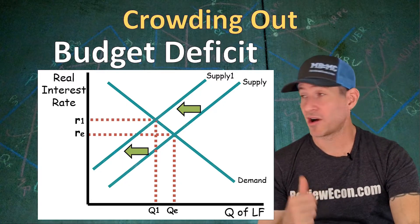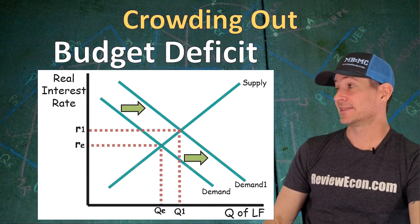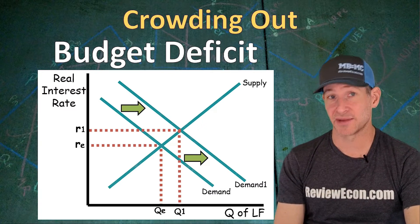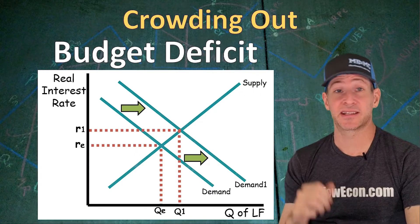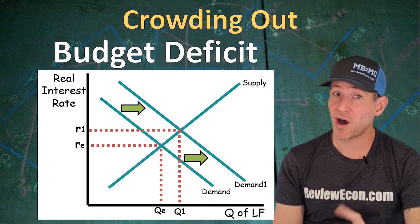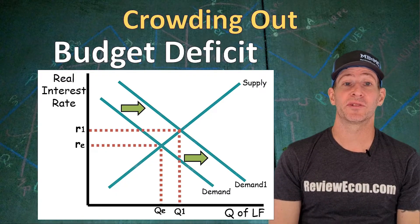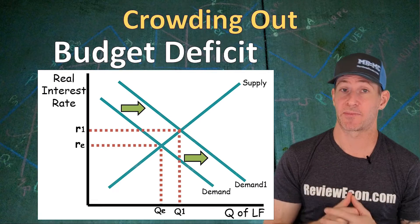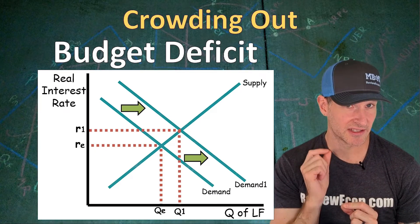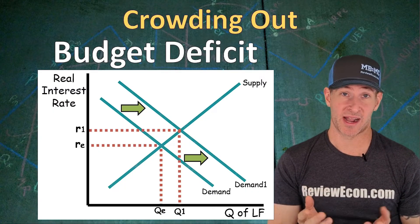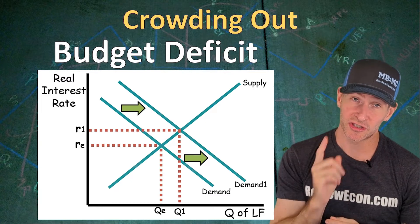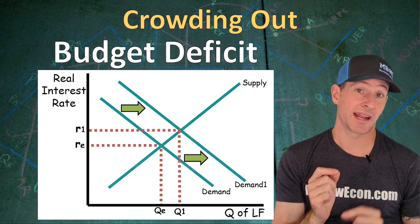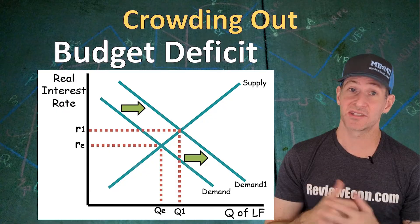The other way of dealing with crowding out on the loanable funds market is shifting the demand curve. Here, the argument is that the government is actually demanding loanable funds alongside private businesses. We will still see an increase in the real interest rate, and here we see an increase in the quantity of loanable funds — but that increase in the quantity of loanable funds is in part national debt. We will actually see a decrease in gross investment and capital formation. So when the government deficit spends, you can either shift the supply curve to the left or the demand curve to the right — either one is acceptable on the AP macroeconomics exam. Use the one your college professor or teacher prefers. Either way, we're going to see an increase in the interest rate and a decrease in gross investment, which causes slower economic growth.